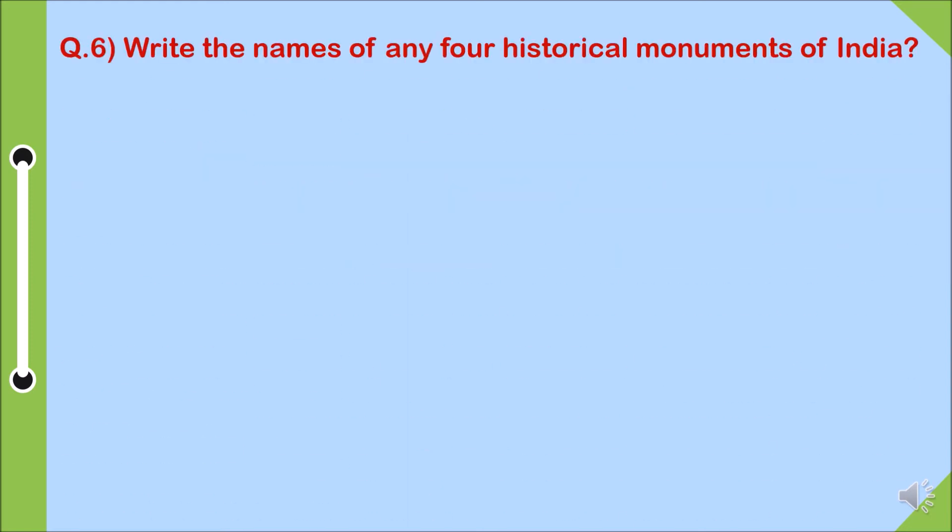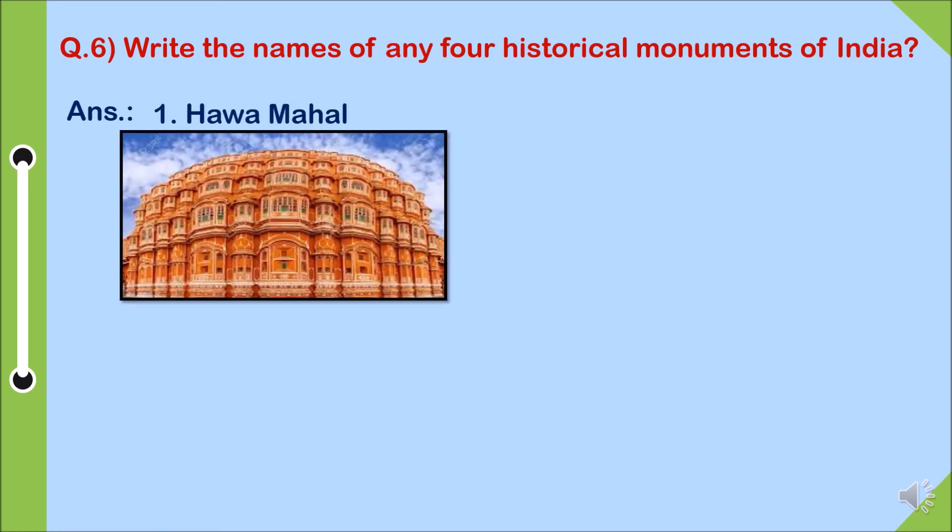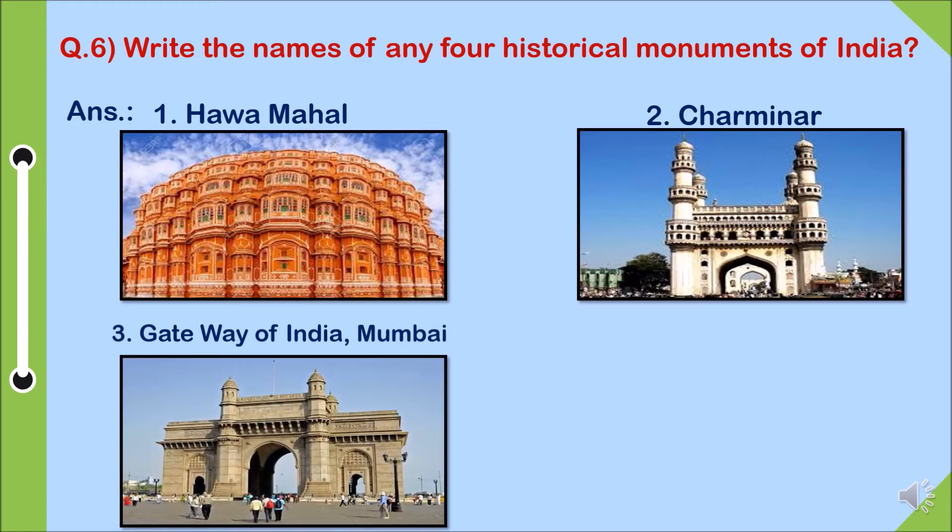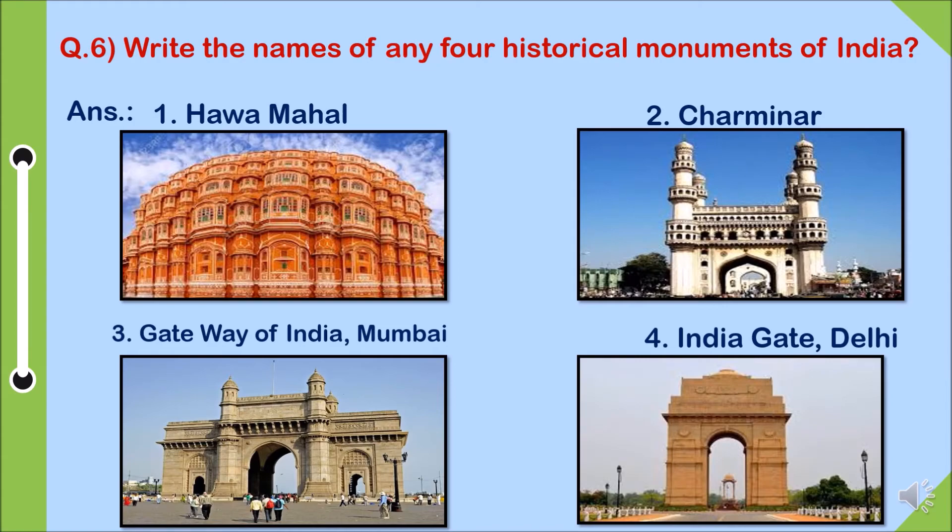Question six, write the names of any four historical monuments of India. Answer: one, Hawa Mahal. Two, Char Minar. Three, Gateway of India, which is in Mumbai. Four, India Gate in Delhi.